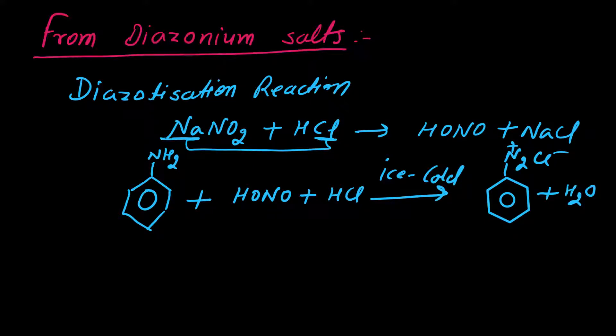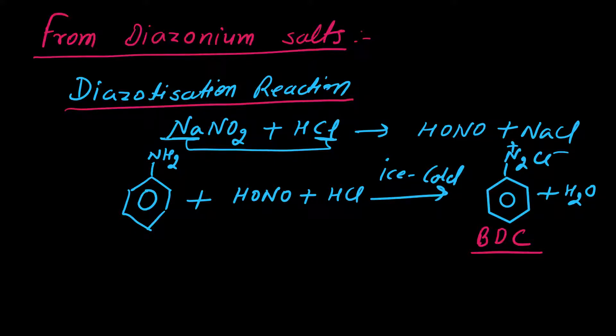यह HNO2 (nitrous acid) aniline के साथ react करता है, साथ में HCl भी है, ice cold condition में। इस reaction से benzene diazonium chloride [C6H5-N2]+Cl- बनता है plus H2O निकलता है। यह जो benzene diazonium chloride बना वो starting material का काम करता है जब हम haloarenes की formation करते हैं — और इसी reaction को diazotization reaction बोलते हैं।